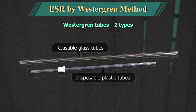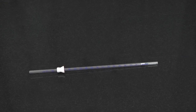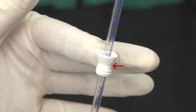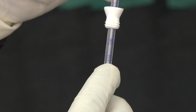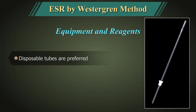These tubes can be disposable or made of glass. A glass tube is graded from 0 to 190, whereas a plastic tube which has a white collar at the lower end is graded from 0 to 170. These gradings may vary with the make of the tubes. Disposable tubes are preferred. A timer is also required.